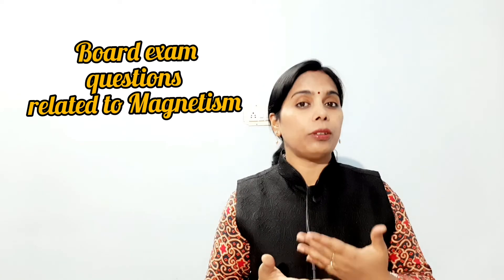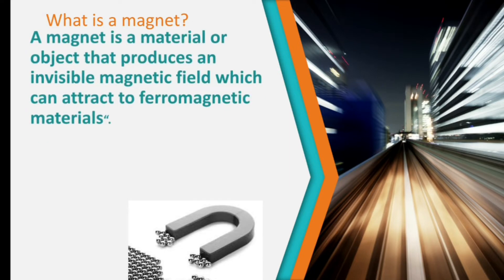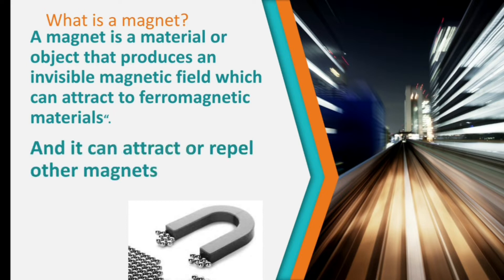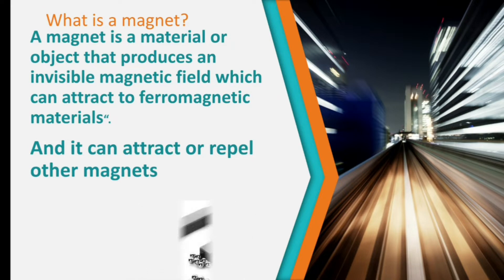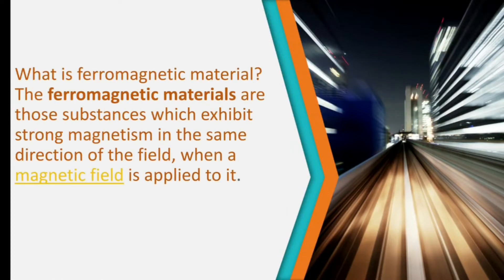What is a magnet? A magnet is a material or object that produces an invisible magnetic field which can attract ferromagnetic materials, and it can attract or repel other magnets. Now we'll come to know what is a ferromagnetic material. Ferromagnetic materials are those substances which exhibit strong magnetism in the same direction of the field when a magnetic field is applied to them.